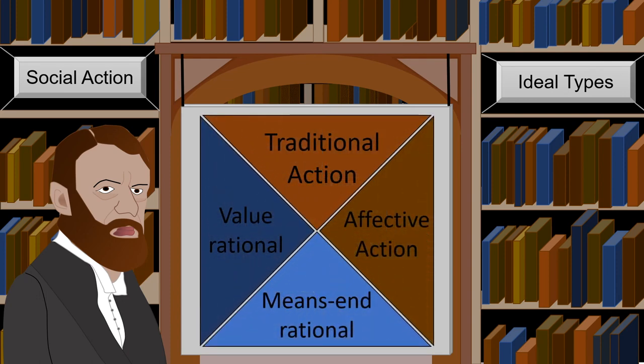It's also important to keep in mind that the order of the social action types is meaningful, because as we go down the list, we can see a progression towards rationality, which you can learn more about in our video titled Modernization as Rationalization. That's all we have for this video. Thanks for listening. Until next time.